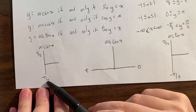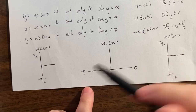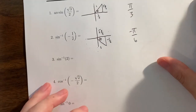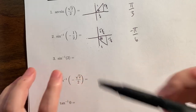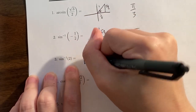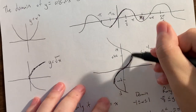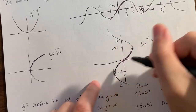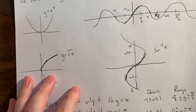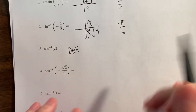As a review: arc sine outputs are between negative pi over 2 and pi over 2. If you don't get an answer in that range, it's wrong. Arc cosine of x must be between 0 and pi, and arc tan is like arc sine. Keep in mind that because we're restricting these functions, there will be some inputs that don't work. For example, inverse sine of 2 does not exist, because sine of any angle is between negative 1 and 1 — there's no angle on the unit circle whose y-coordinate is 2.